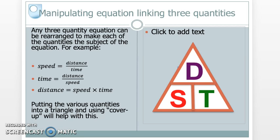And we can then calculate all the other two quantities by using what's called cover-up. So if I want to know what T is, cover up the T, and I see it's D over S, distance over speed. If I want distance, cover up the D, and I see that's S times T. If anything's above each other, it's divide. If they're next to each other, it's multiply. Just a useful technique to help solve those problems.